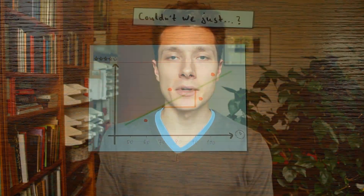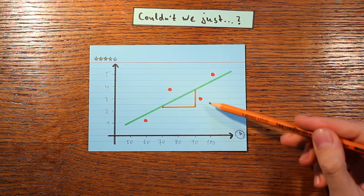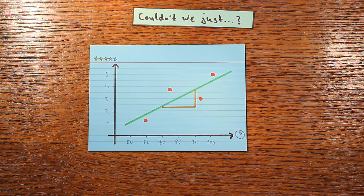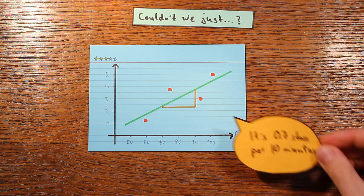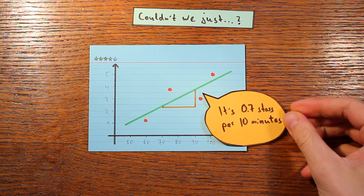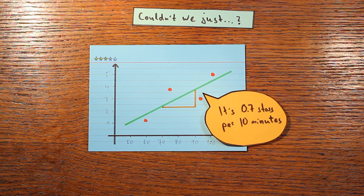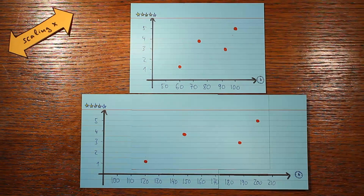Maybe you're wondering why we're doing all this. After all, we could use something much simpler, like the slope of the fitted line. That would summarize the scatter plot somehow, and it would be positive if the overall trend is positive and negative if the overall trend is negative. But it turns out the correlation coefficient has some really neat properties — I'll show you the first one with an example.